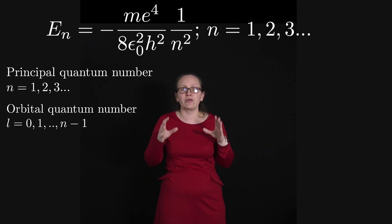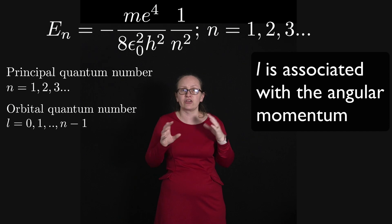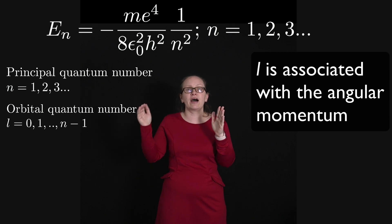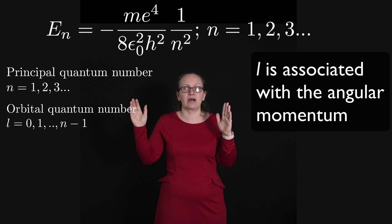Now there's also a quantum number given the symbol L which is known as the orbital quantum number, and this is associated with the angular momentum of the electron in that state. And the orbital quantum number can have values L equals zero all the way up as integers to L equals n minus one.